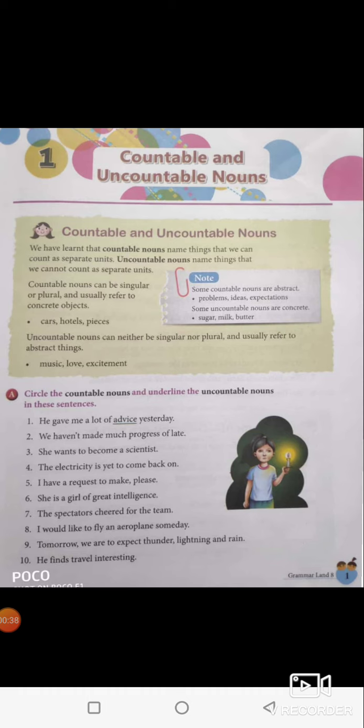We have learnt about countable nouns and uncountable nouns earlier as well. A countable noun is something that can be counted like 1, 2, 3, 4 — per kg or per unit. Uncountable nouns cannot be counted; they cannot be counted in plural form.